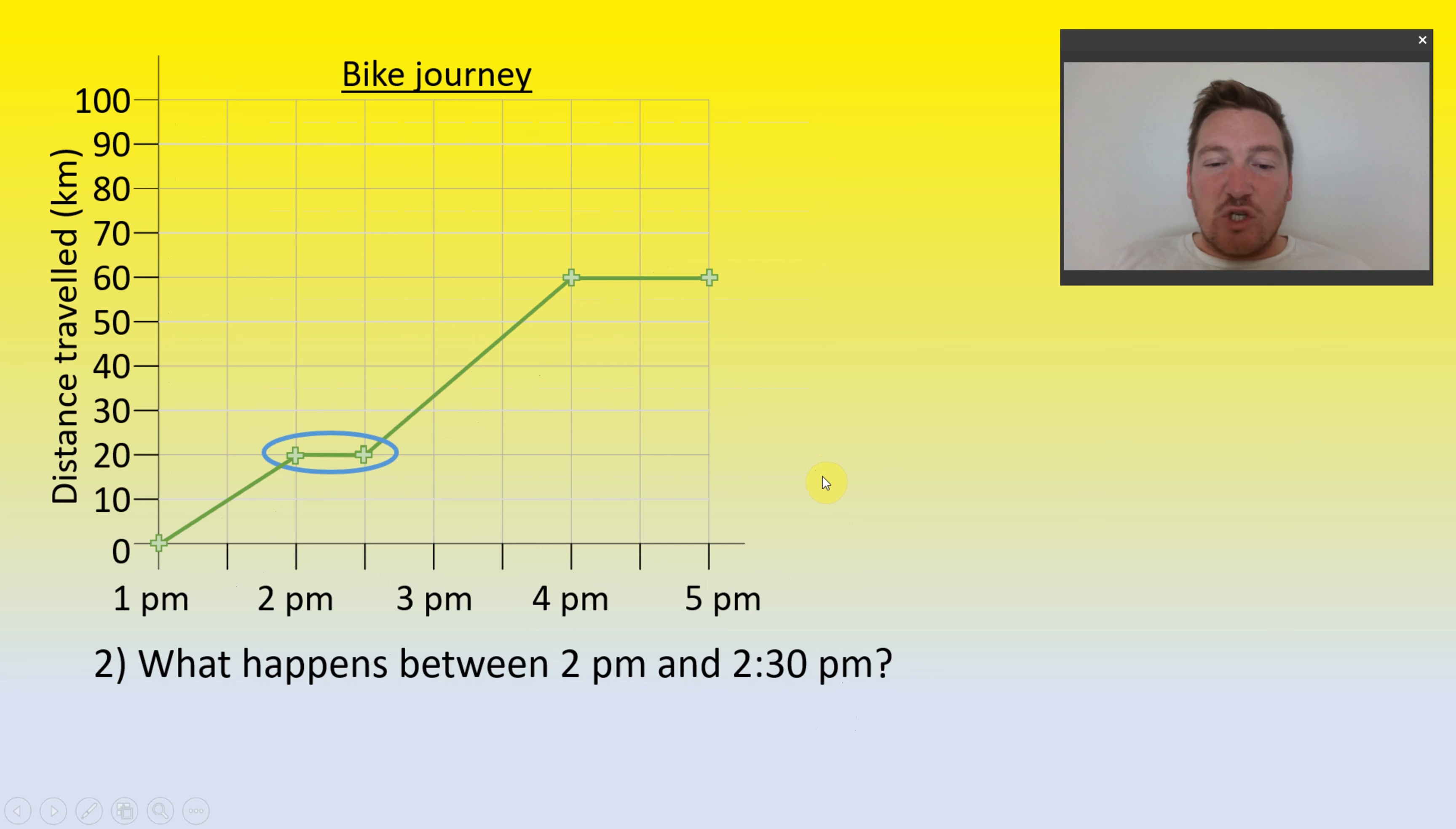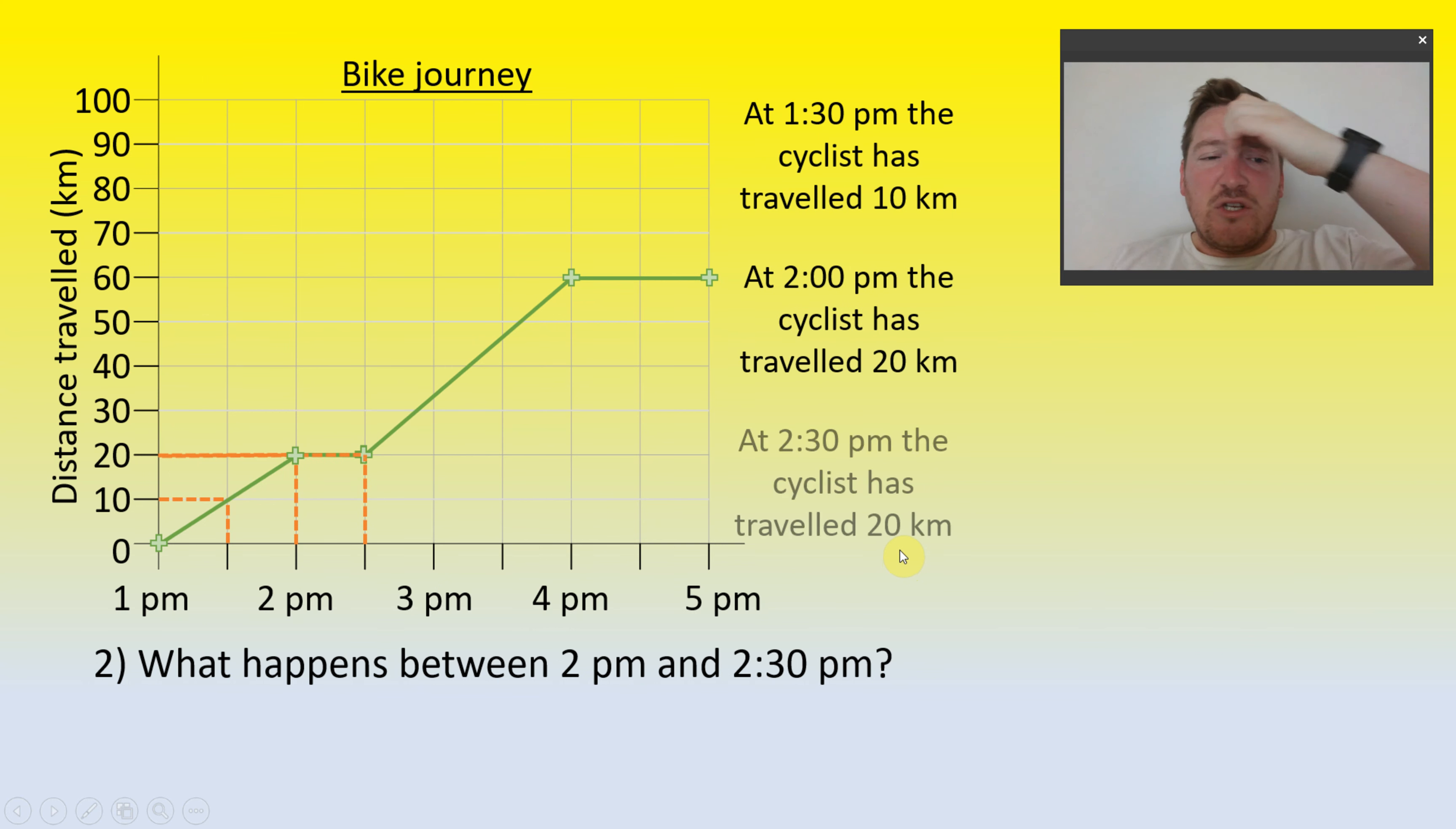What happens between 2pm and 2:30pm is our next question. So they've traveled 10 kilometers in the first half hour, an additional 10 kilometers in the second half hour, and then they've traveled nothing in the next half hour. So what do you think has happened to that cyclist to have meant that they've traveled the same distance between 2 and 2:30pm? If you've put the cyclist has stopped, paused, had a puncture, anything that meant they were stationary, you'll be correct. Well done.